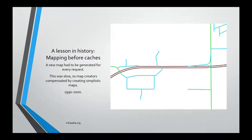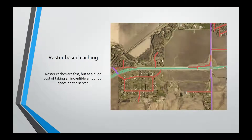Many of you are aware of using caches for serving GIS out to the internet. Before we had caches, each server had to generate each and every request — it was slow. So creators had to compensate by creating simplistic maps without much detail. That's how things started with ArcGIS, ArcIMS, and MapServer. They found that drawing each and every request was rather slow, so they started with caching. Creating raster caches — well, not creating them, but displaying them — is very fast.